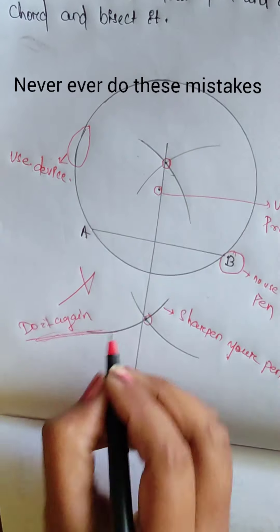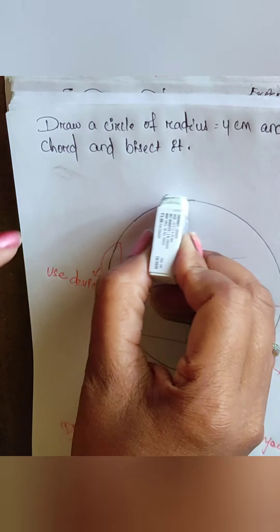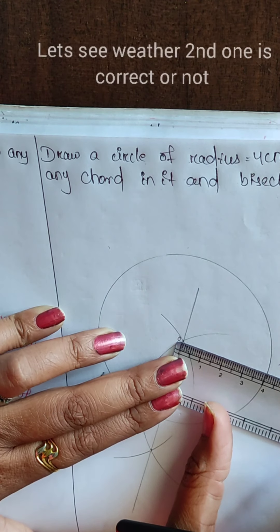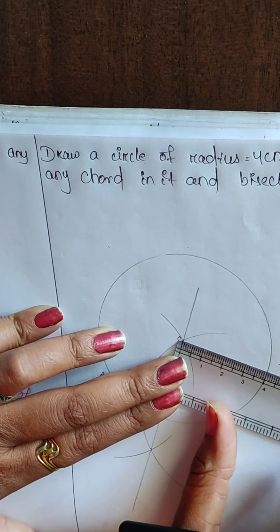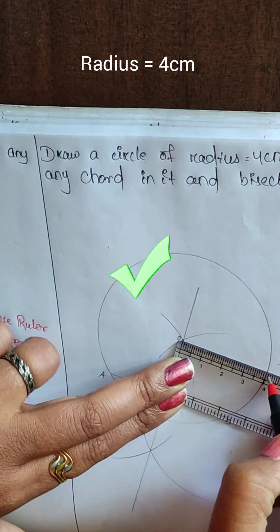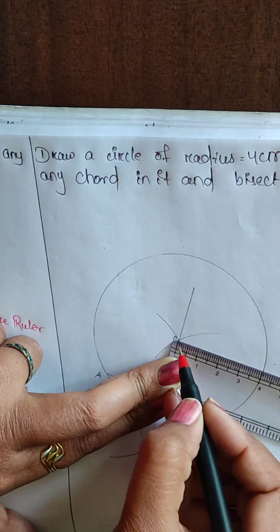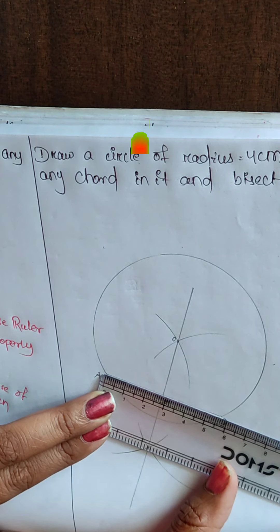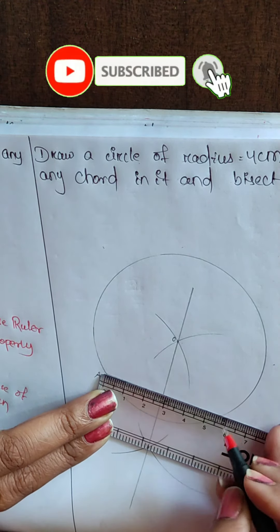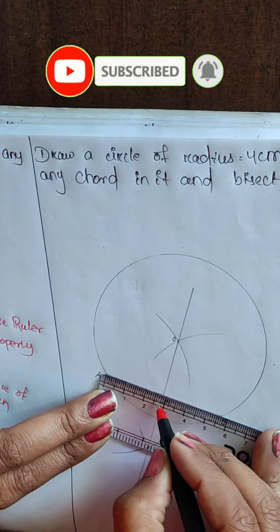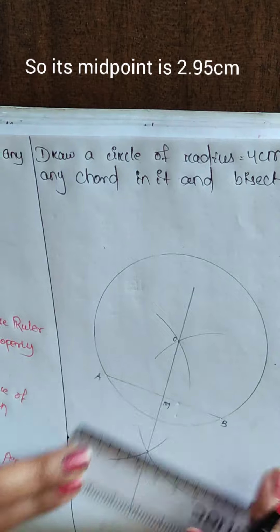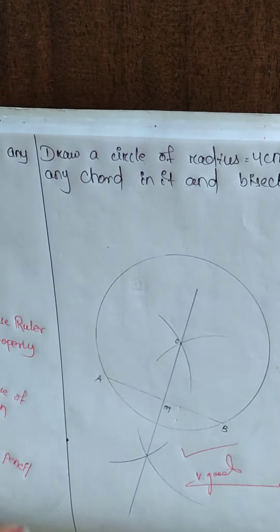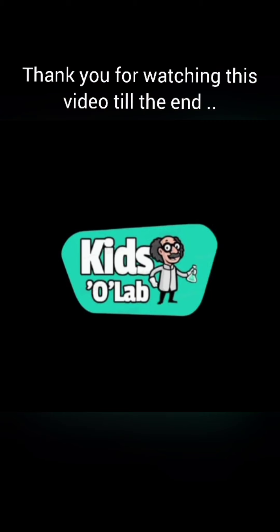After knowing this, never ever do these mistakes. And after correction, never ever erase it. Let's see whether the second one is correct or not. So here you can see the radius is absolutely 4 cm. So it is correct. Now let's see, the length of the chord is given 5.8 cm. It means if the line segment is bisected here, the measurement should be 2.9. Yes. Its midpoint is 2.95 cm. For visibility, dark strokes are given for R and S. Always give light strokes. Thank you for watching this video till the end.